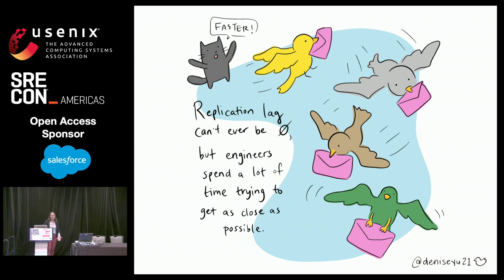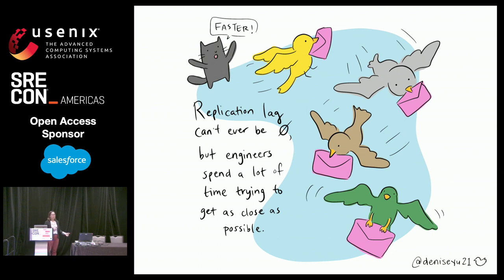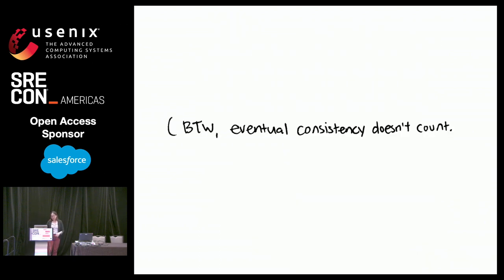This is really, really hard because it basically demands instant and universal replication. Replication can't actually be zero because you have electric pulses that travel along copper wire for data replication to happen — we're upper bound by the speed of fiber optic data transfer. If you're a database engineer, you probably spend a lot of time trying to get as close as possible to zero, but it's really tough. And eventual consistency doesn't count — things asynchronously getting replicated in the background just doesn't count as part of the CAP formulation.